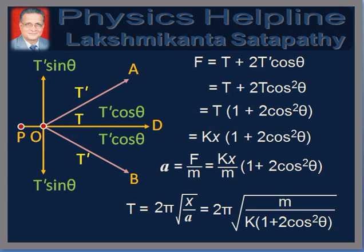Therefore, the time period is given by T equal to 2π√(X/A), which equals 2π√(M / K(1 + 2cos²theta)). This is the general expression for angle AOB equal to 2 theta, which can be applied to the specific angles given in the question.